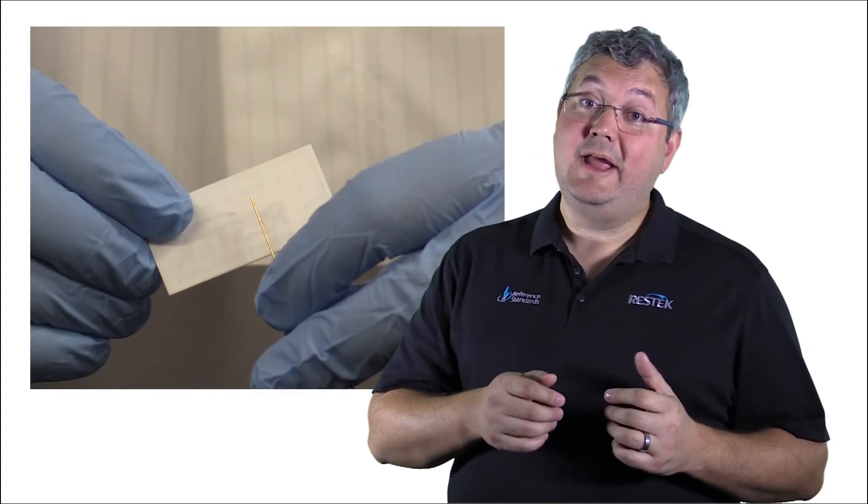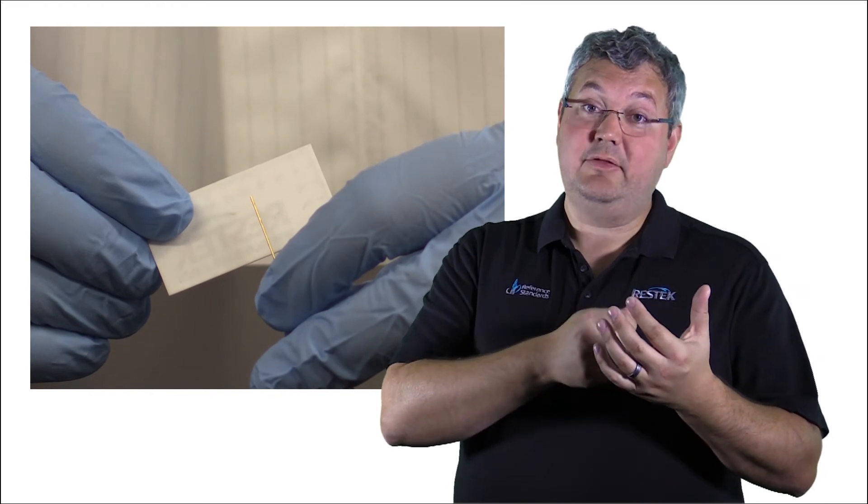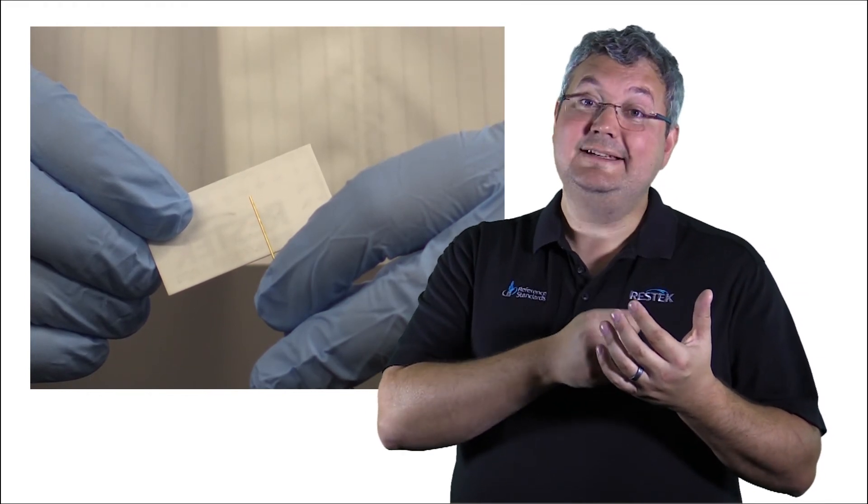Or, if your eyes happen to be a little bit better than mine, you can probably get away with holding the column up against the back of the scoring wafer, and there usually is enough contrast for you to tell if you have a nice square cut.